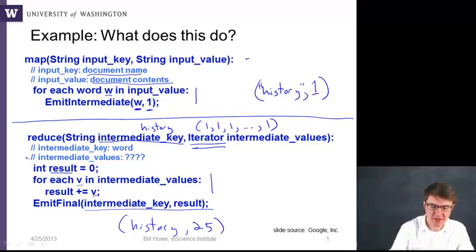Now I claim that without changing this reduce function at all, you could make a change to this map function and get a significantly faster algorithm for computing this. So I want you to think for a second about how that might be done. So the thing to look at here is that...